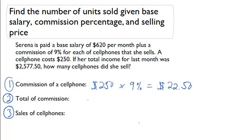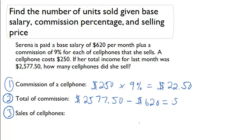Now we can figure out the total commission. Total commission is going to be $2,577.50 minus $620.00, and that's going to give us $1,957.50.